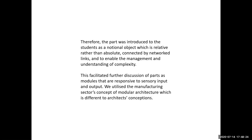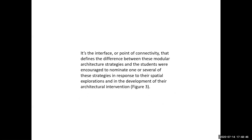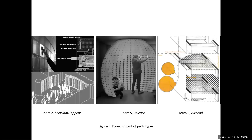We utilize the manufacturing sector's concept of modular architecture, which is different to architects' conceptions. For all scales of production in the manufacturing sector, the concept of modularity has been defined by Ulrich to include the strategies of slot, sectional, and bus modularity, as illustrated here in figure two. It is the interface, or point of connectivity, that defines the difference between these modular architecture strategies. The students were encouraged to nominate one or several of these strategies in response to their spatial explorations and in the development of their architectural intervention, as shown in figure three. Here the prototypes are seen developing by the three teams: Team 2, Team 5, and Team 9.